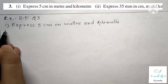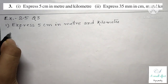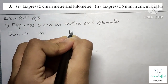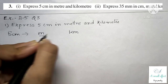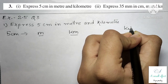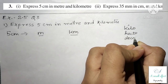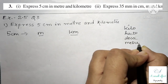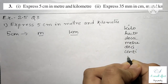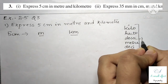Exercise 2.5, Question number 3, first part: express 5 centimeter in meter and kilometer. To convert centimeter into meter and kilometer, we write a table: kilo, hecto, deca, meter, deci, centi, millimeter.